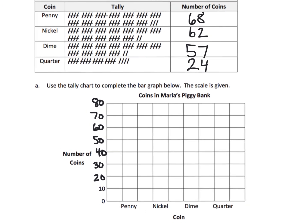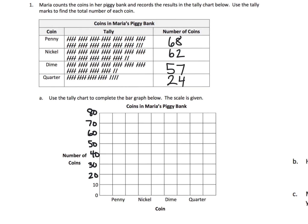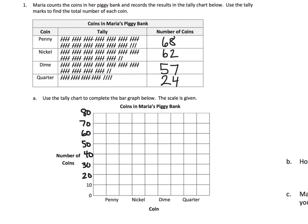Now we're going to make these graphs. They won't be perfectly on the lines because the scale goes up by 10s and none of these values are exactly a multiple of 10. For 68 pennies, let's do it in blue: that's 10, 20, 30, 40, 50, 60 — now we can't do a complete box. We're going to have to estimate, most of the way up. There are our 68 pennies.